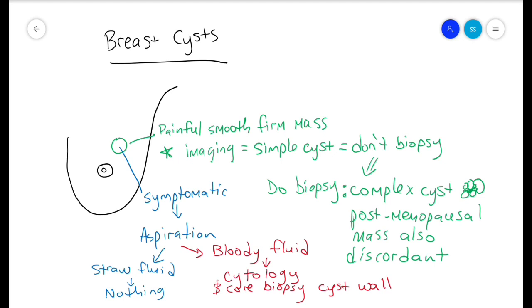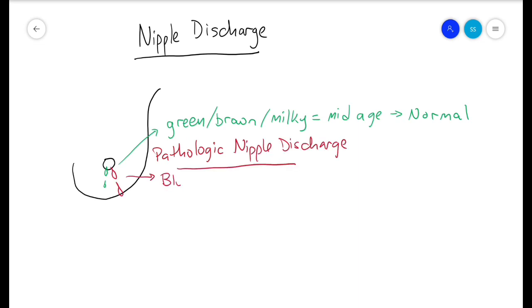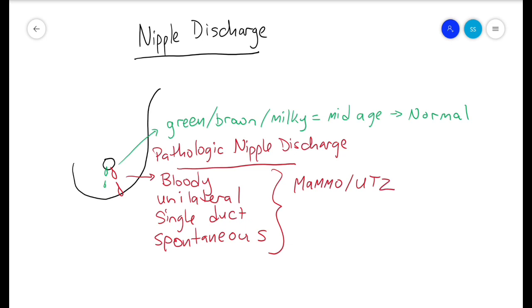Nipple discharge is common. Many women get green, brown, or milky fluid from the nipple, especially during the middle age years. This is not concerning. Pathologic nipple discharge tends to be bloody, unilateral, from a single duct, and occurring spontaneously. If it is concerning nipple discharge, obviously start with mammogram and ultrasound looking for an intraductal papilloma, which is the most common cause of bloody nipple discharge. If a papilloma is seen, it is usually biopsied and a clip is left. I tend to do wire localized excisional biopsies of papillomas still.